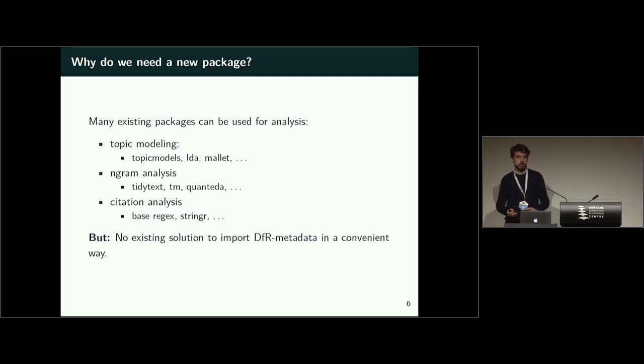So, why do we need a new package here? Of course, you can analyze this kind of data with already existing packages. You can do topic modeling as we saw in the first talk with a few packages. You can analyze n-grams with tidytext, tm, quanteda. And for citation analysis, you generally only need base regex or stringr. But until now, there was no solution to import this data from JSTOR, which is in a bit complicated format. It's XML and if you're not into programming, that can be quite hard to get the content out.